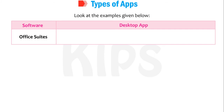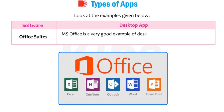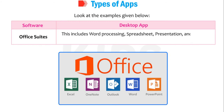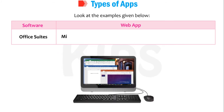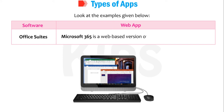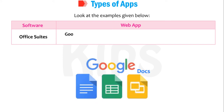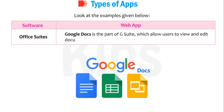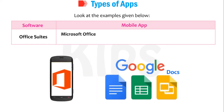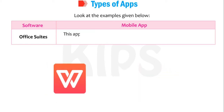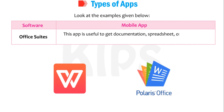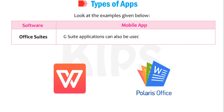For Office Suites: MS Office is a very good example of desktop-based office applications, including word processing, spreadsheet, presentation, and other applications. Microsoft 365 is a web-based version of Microsoft's Office Suite. Google Docs is part of G Suite, which allows users to view and edit documents in real-time through a web browser. The Microsoft Office Mobile app combines Word, Excel, and PowerPoint with exclusive features, useful for getting documentation, spreadsheet, or presentation-related work done on a mobile phone. G Suite applications can also be used on a mobile phone.